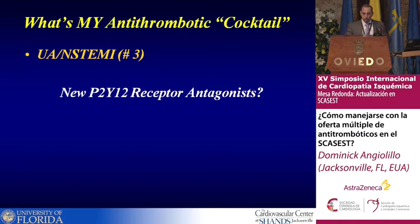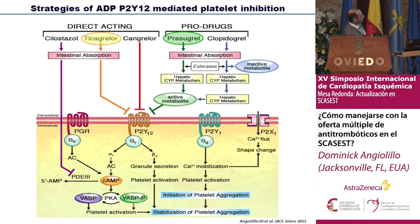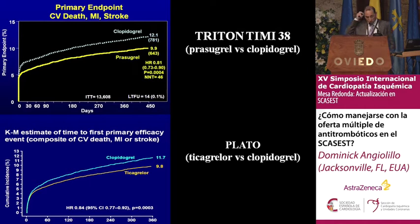The next question is: is there a role for the new P2Y12 receptor antagonists? Prasugrel is a third-generation thienopyridine with more favorable pharmacokinetics, translating into better pharmacodynamics, and it blocks the P2Y12 receptor irreversibly. Ticagrelor is a first-in-class CPTP, a direct-acting agent on the P2Y12 receptor. We have two large-scale clinical trials testing the superiority of each one over clopidogrel in high-risk ACS patients — both trials met their primary endpoint showing superiority over clopidogrel with long-term treatment.